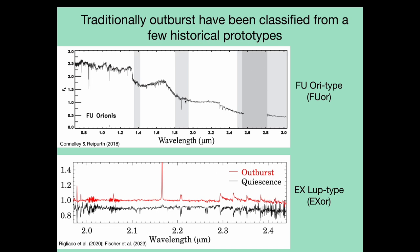FU Ori-type outbursts have a characteristic absorption spectrum, while the spectra of EX Lupi-type objects are dominated by emission features. Notably, the infrared emission from CO overtone bands is a distinctive feature of the EXORs spectra.